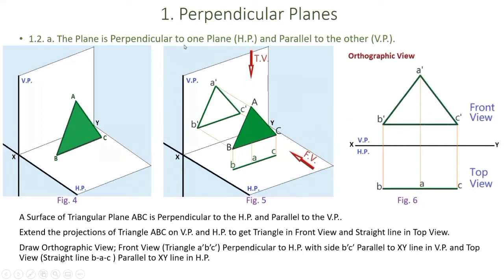Next: a plane perpendicular to the horizontal plane and parallel to the vertical plane. Here we have placed a triangular plane between the two principal planes such that it is parallel to the vertical plane and perpendicular to the horizontal plane. By extending points A, B, and C onto the vertical plane, we get a triangle where base BC is parallel to the XY line — this gives the front view: triangle A-dash, B-dash, C-dash in the vertical plane.